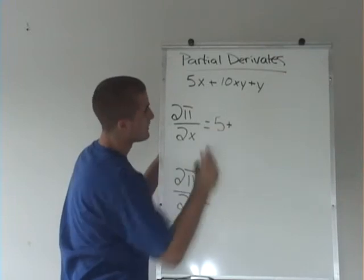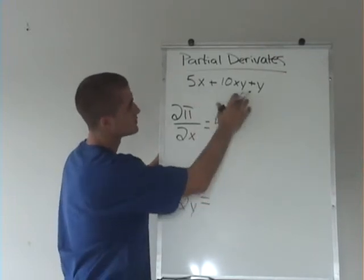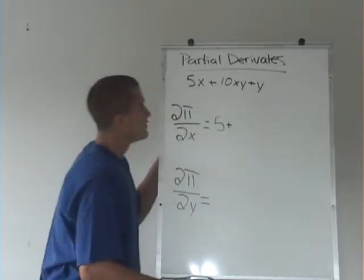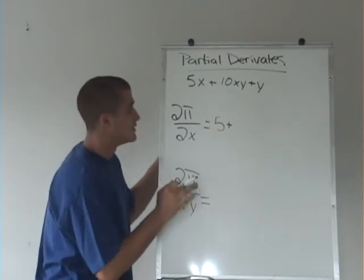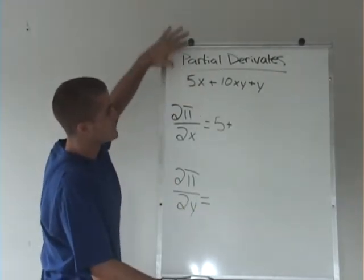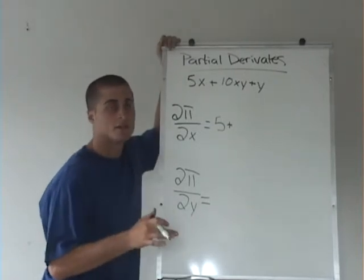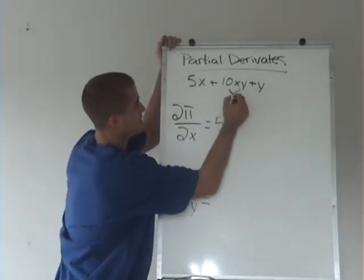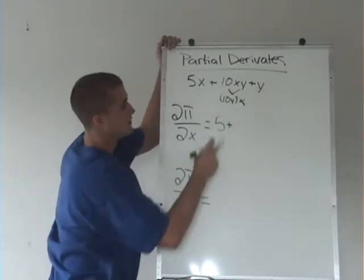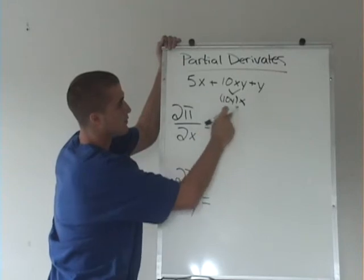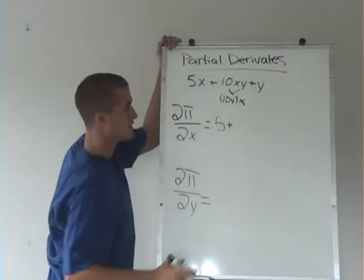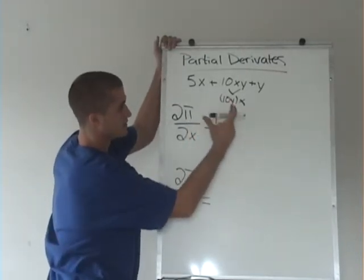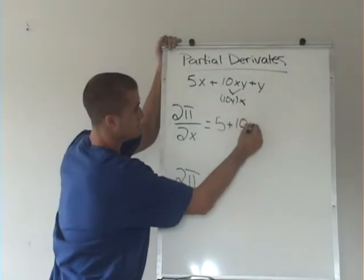Plus 10xy. We have another variable in there now, so we have to treat it as if it's a number. So if we rewrite this as 10yx, we can just pretend like this whole thing right here is just a number, and take the derivative of this, which is just 10y.